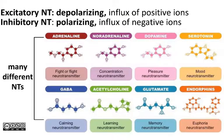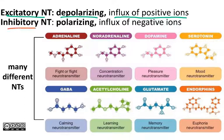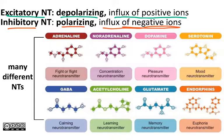Excitatory inputs are depolarizing — if the cell is becoming less polarized, less negative inside with respect to the outside, that means you've had an influx of positive ions. Inhibitory neurotransmitters, on the other hand, are polarizing or hyperpolarizing, making the inside of the cell more negative. There are many different neurotransmitters; these are some you might be familiar with. There's only one that you need to know about, and we won't talk about it until we get to the muscular system.